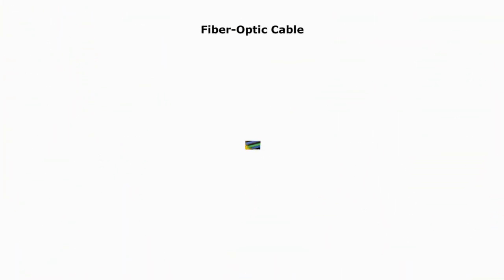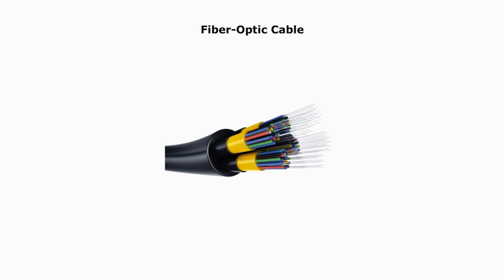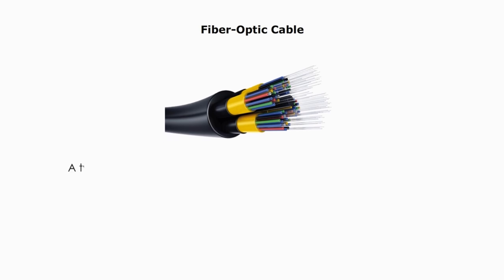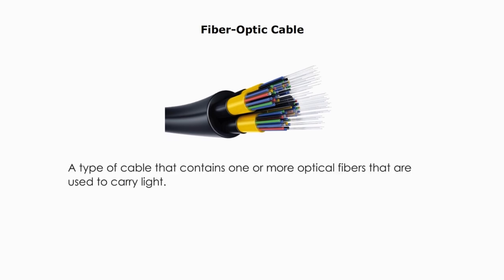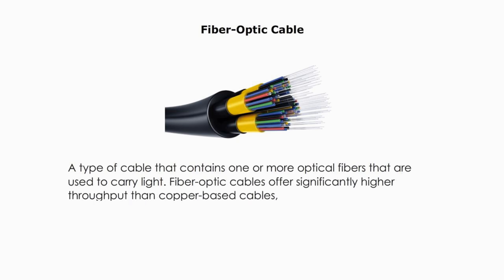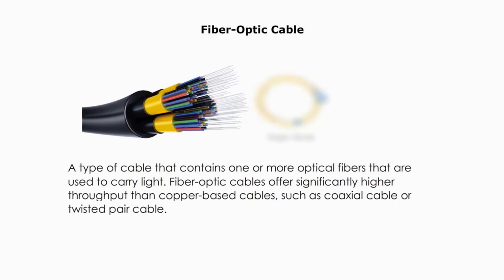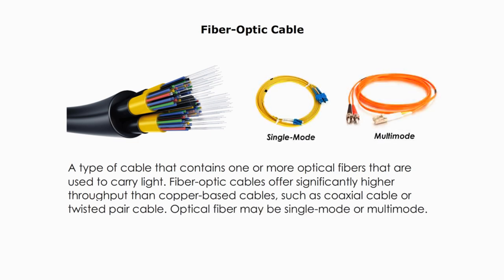What is fiber optic? Fiber optic cable, or optic fiber cable, or simply fiber cable, is a type of cable that contains one or more optical fibers that are used to carry light. Fiber optic cables offer significantly higher throughput than copper-based media such as coaxial cable or twisted pair cable. Optical fiber may be single-mode or multi-mode.